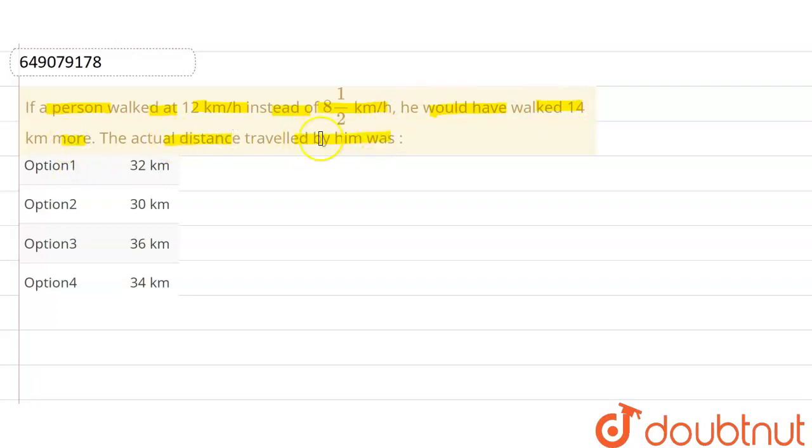The actual distance travelled by him was: 32 km, 30 km, 36 km, or 34 km. The question is that a person walks at 12 km per hour instead of 8½ km per hour, and would have walked 14 km more. We need to find the actual distance.